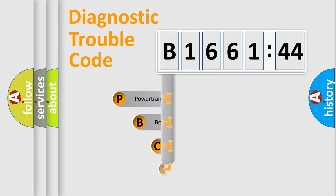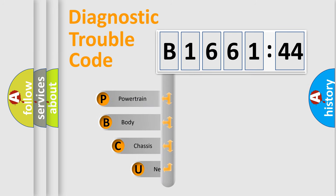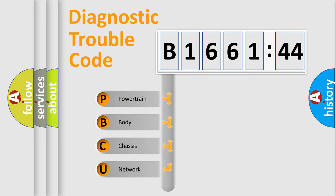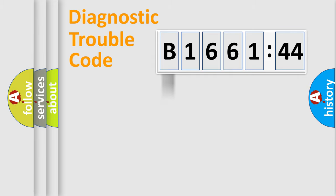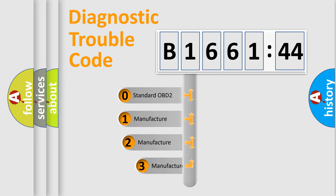Let's do this. First, let's look at the history of diagnostic fault code composition according to the OBD2 protocol, which is unified for all automakers since 2000. We divide the electric system of the automobile into four basic units: Powertrain, Body, Chassis, and Network.